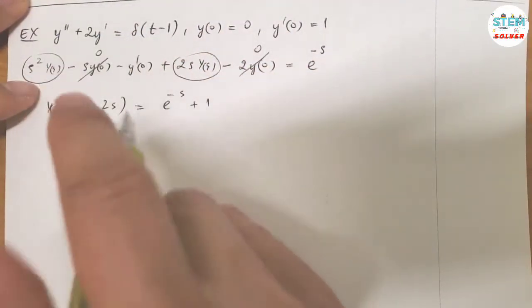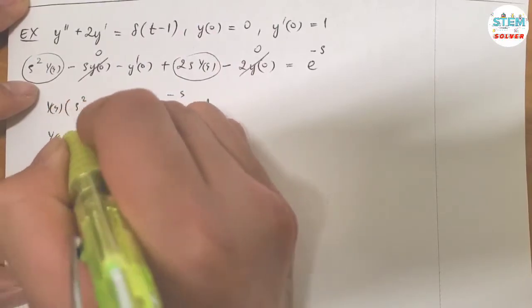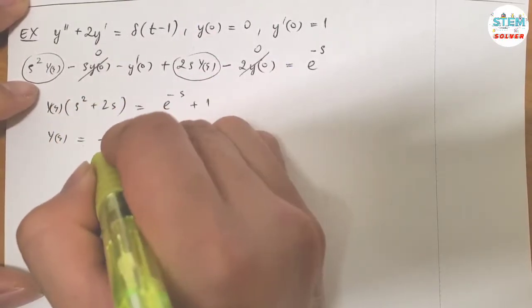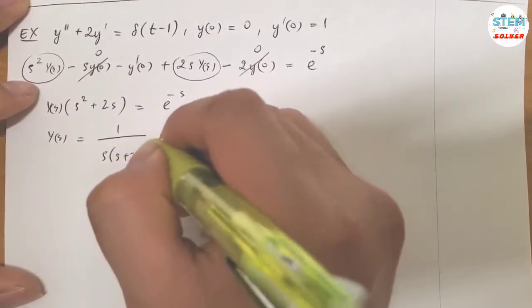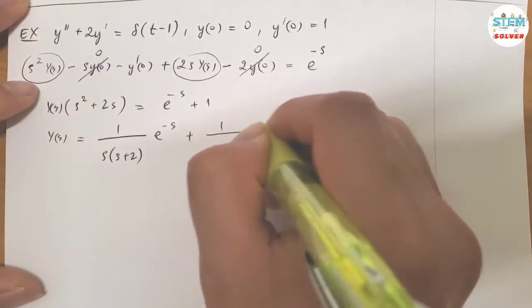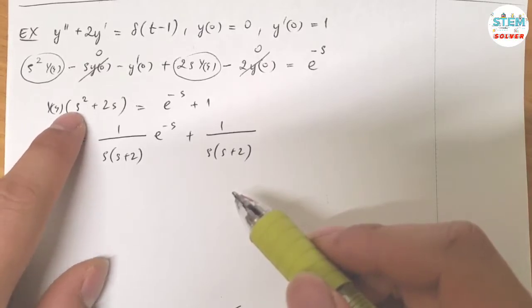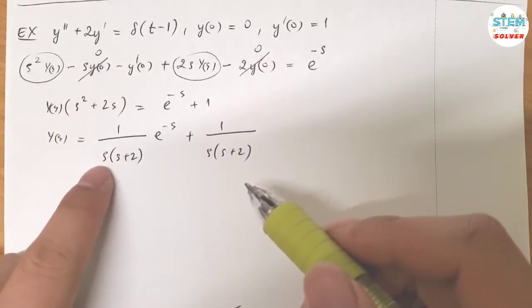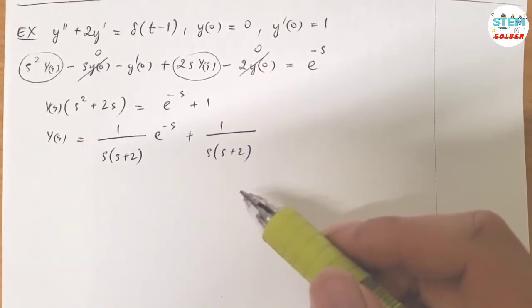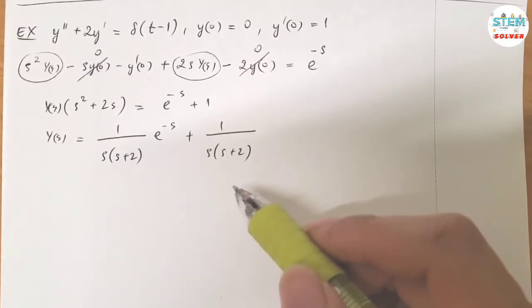Now divide both sides by S square plus 2S. So at the same time, I'm going to factor it out. So divide both sides by S square plus 2S, so this is when you multiply them out, you're gonna have S square plus 2S. So to save time, I'll do 2 steps at once.